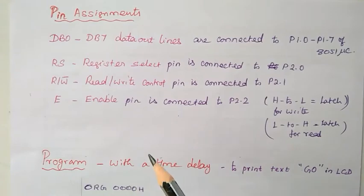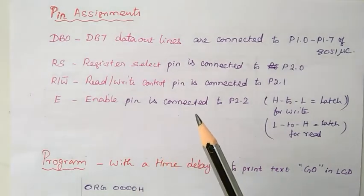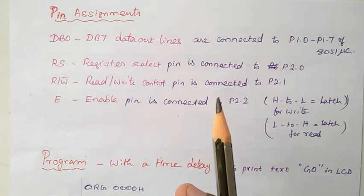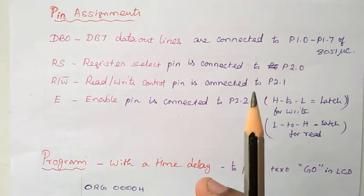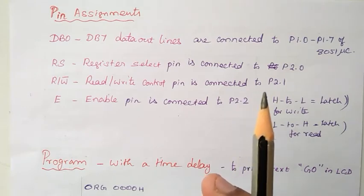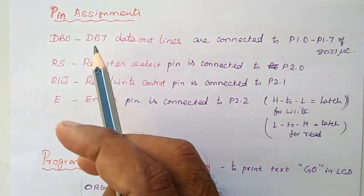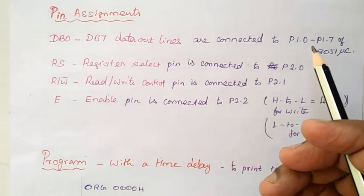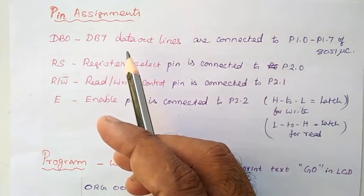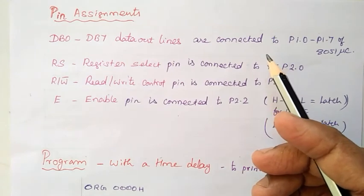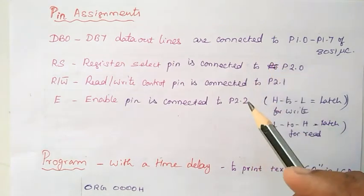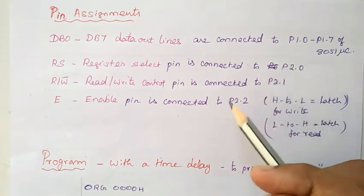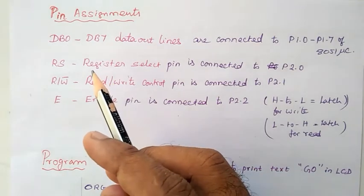For interfacing a 16x2 LCD, we have to assign some pins from the 8051 microcontroller. Totally 11 pins are required to interface the LCD. Out of them, eight are data lines DB0 to DB7. These data lines are connected to Port 1. The remaining three lines are P2.0, P2.1, and P2.2, which are connected to the control signals of the LCD.